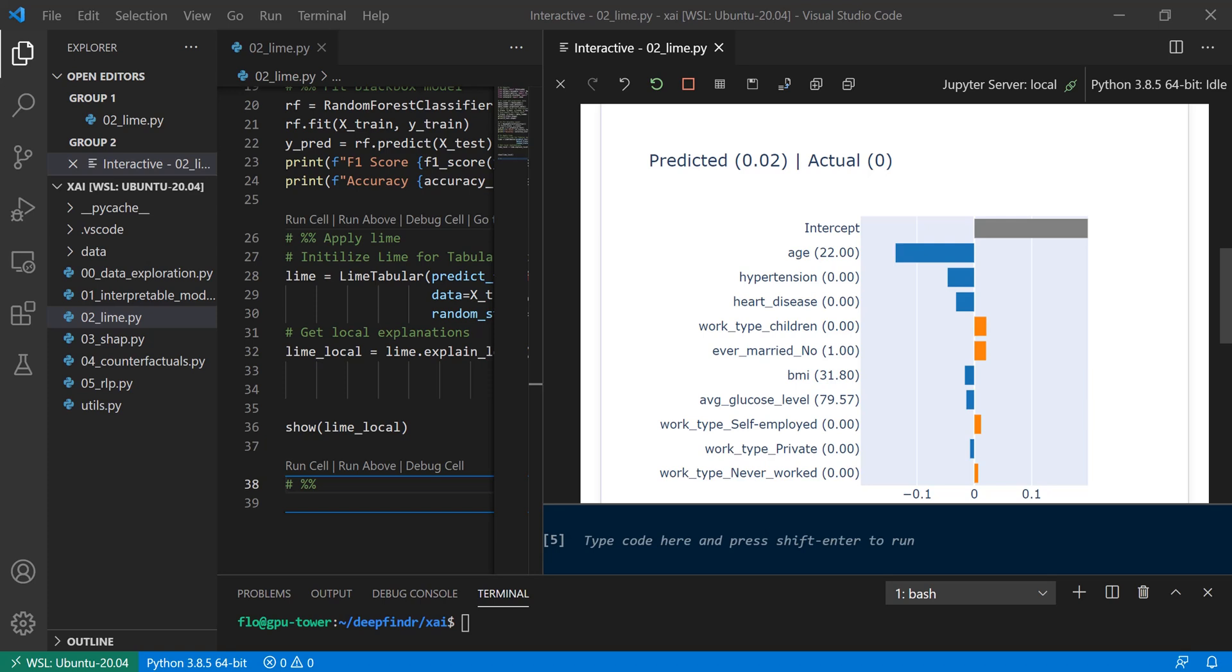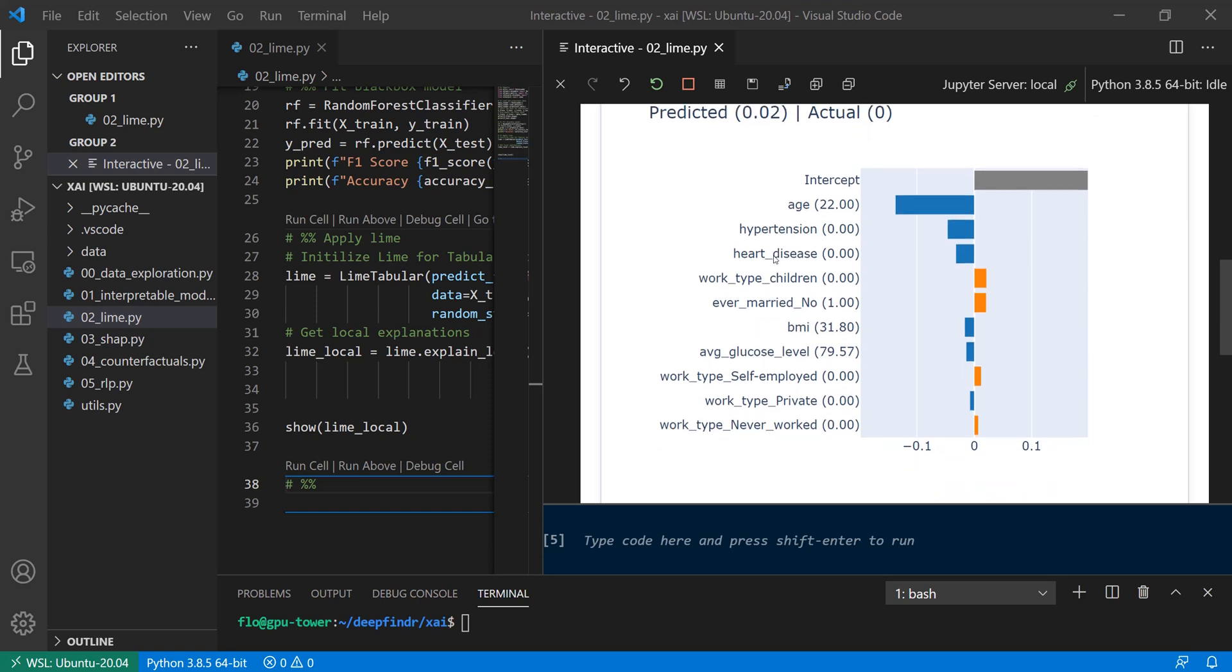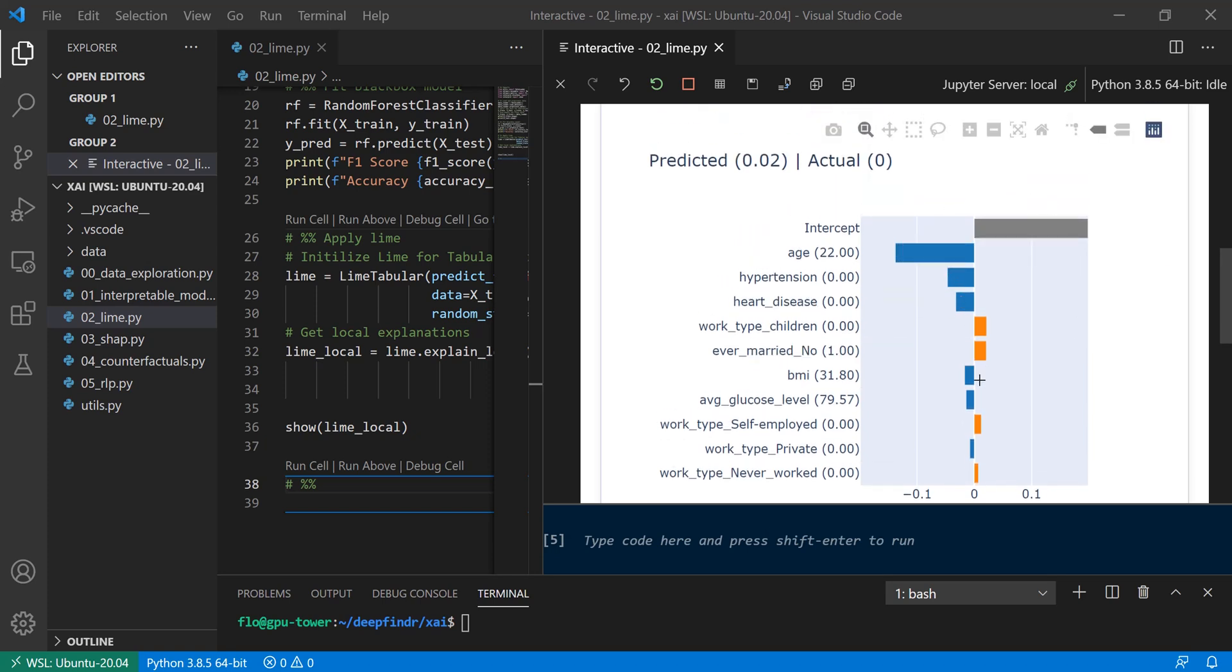If we have a look at another prediction here, which is also predicting no stroke, we see that the age is 22 here, so relatively young. And that's why the age has an even stronger impact for this individual prediction. So as you can see, LIME can also be used on any black box model to get those kind of explanations we've also seen in a previous video.